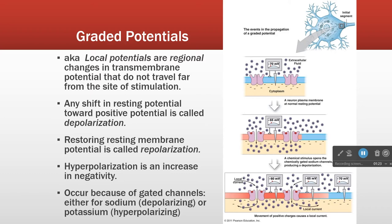Everything we've talked about so far has been looking at just one tiny area of the cell. Now we have to zoom out and consider a big cell. A local potential is when the activation of a receptor in one area of the cell membrane causes a region of the cell to depolarize. If we have enough of that signal, the one small region will expand to include the whole cell.